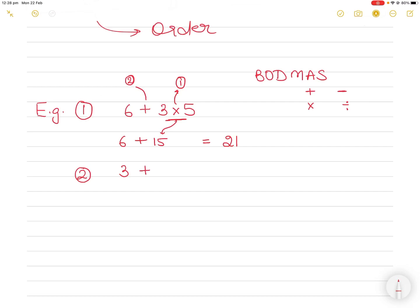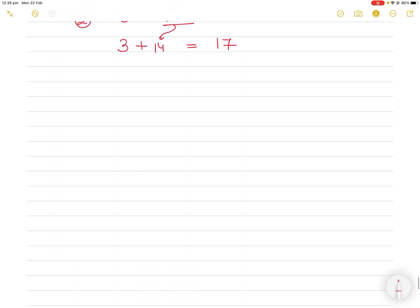Example 2: 3 + 2 × 7. Multiplication comes before addition in BODMAS, so we solve 2×7=14 first, then 3+14=17.